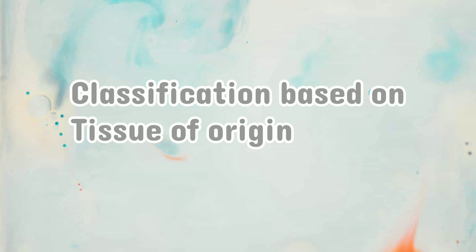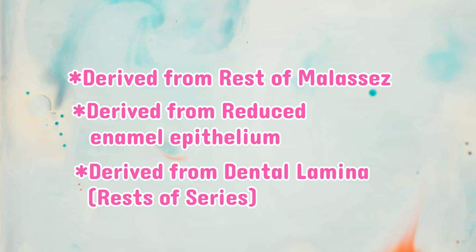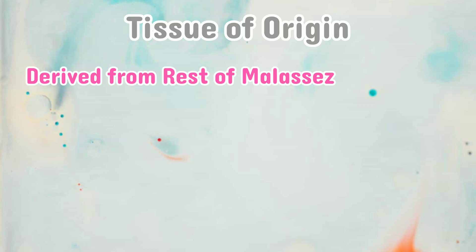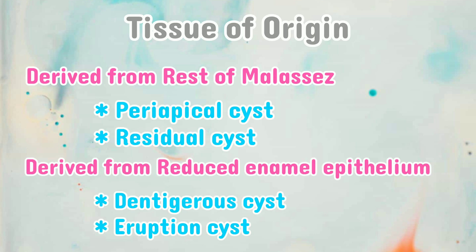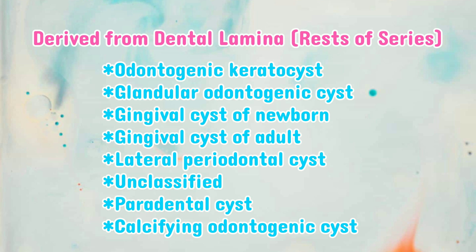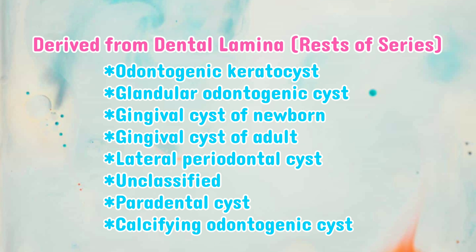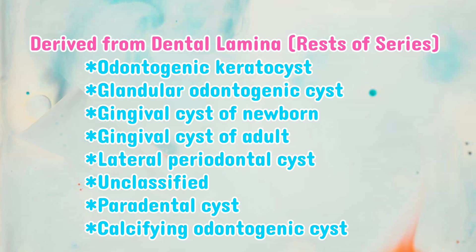We could also classify odontogenic cysts according to tissue of origin. Tissue of origin is further subdivided into: derived from the rests of Malassez, derived from reduced enamel epithelium, and derived from the dental lamina. From the rests of Malassez, we have periapical cysts and residual cysts. From the reduced enamel epithelium, we have dentigerous cysts and eruption cysts. From the dental lamina, we have odontogenic keratocysts, glandular odontogenic cysts, gingival cysts of newborn and adult, lateral periodontal cysts, unclassified, paradental cysts, and calcifying odontogenic cysts.